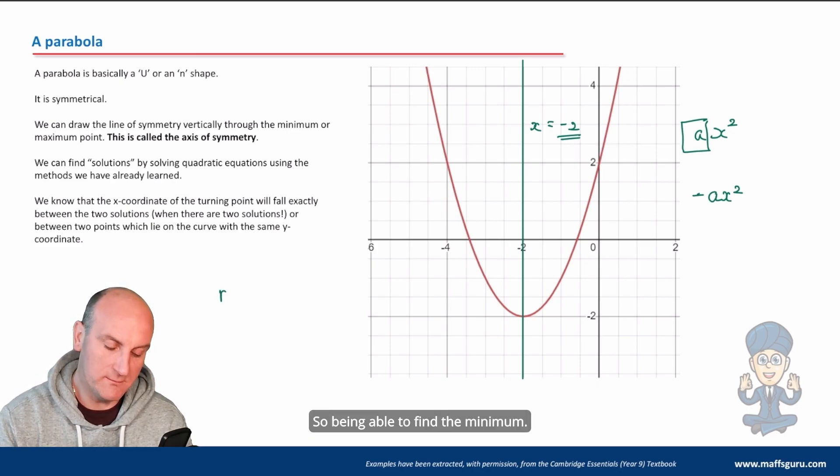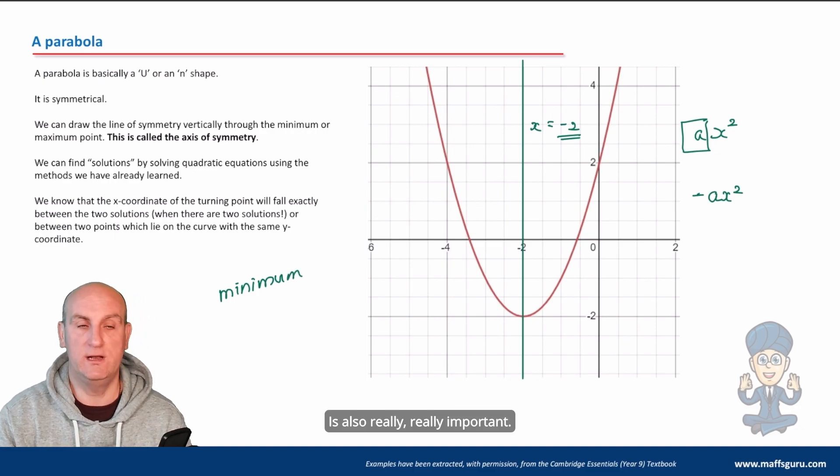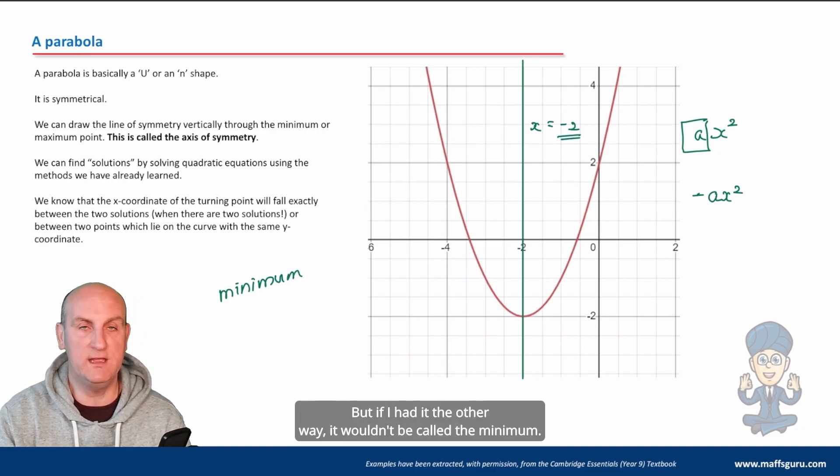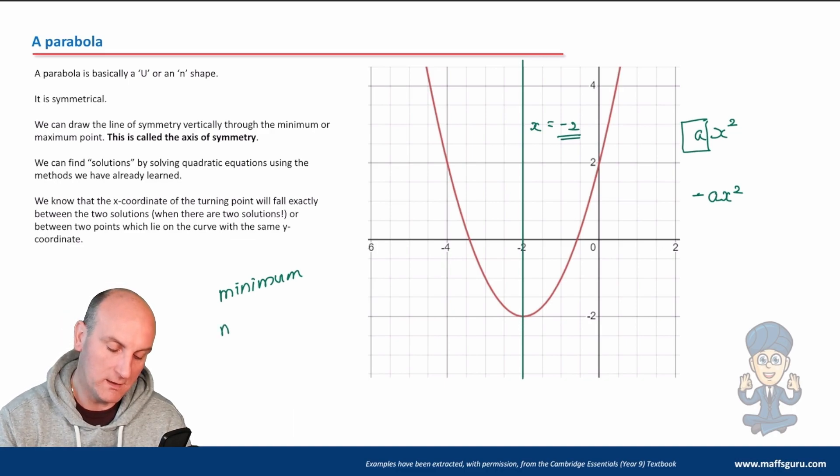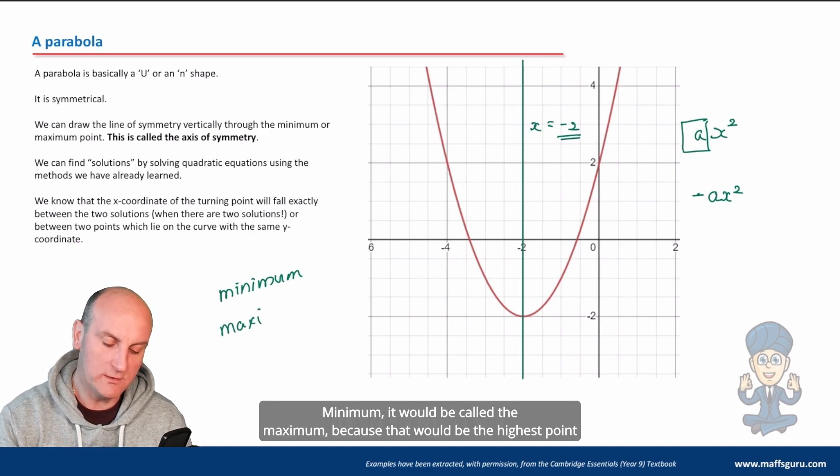The very lowest part of a parabola is called the minimum, so being able to find the minimum is also really really important. If I had it the other way it wouldn't be called the minimum, it would be called the maximum because that would be the highest point my graph would go to.